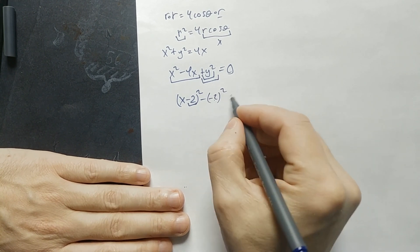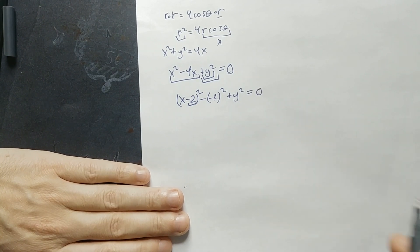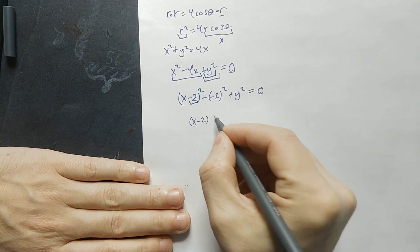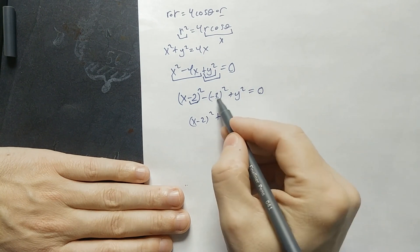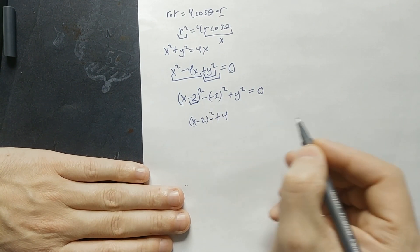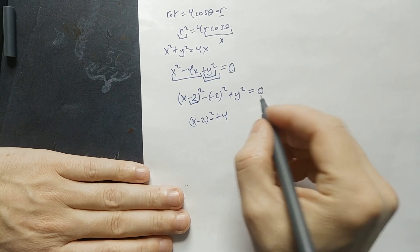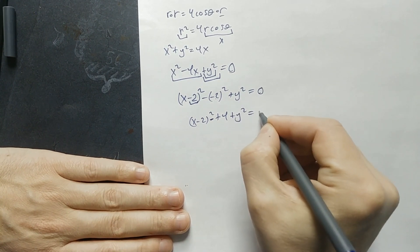So minus the negative 2 squared plus the y squared is equal to zero. So it's x minus 2 quantity squared plus 4 here. But then this is a negative here, so the whole thing ends up being like this. Minus a positive 4, if you like. Anyway, plus y squared is equal to zero.